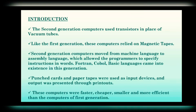Second generation computers moved from machine language to assembly language, which allowed programmers to specify instructions in words. FORTRAN, COBOL, and BASIC languages came into existence in this generation. Punched cards and paper tapes were used as input devices, and output was presented through printouts. These computers were faster, cheaper, smaller, and more efficient than first generation computers.